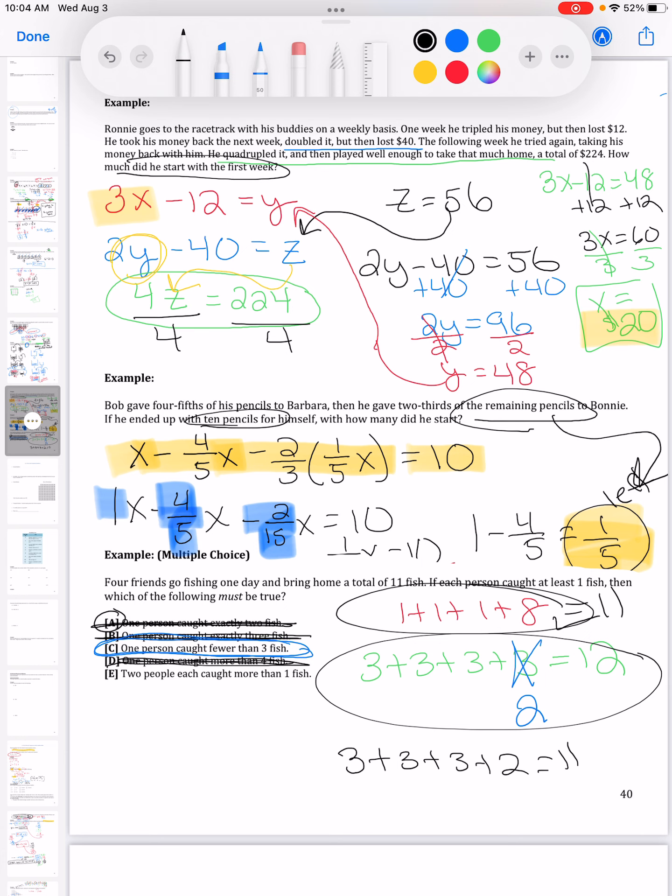Nobody caught more than four fish, so I can make that one be false. Two people caught more than one fish. Going back up here to my first example that I had up here, only have one person catching more than one fish, so that one's also false. So I eliminated all the false answers to be left with the true answer. So C is the true answer.